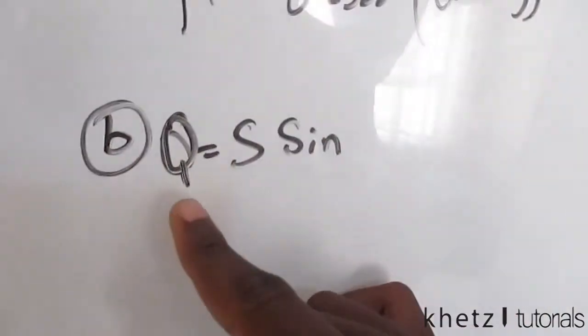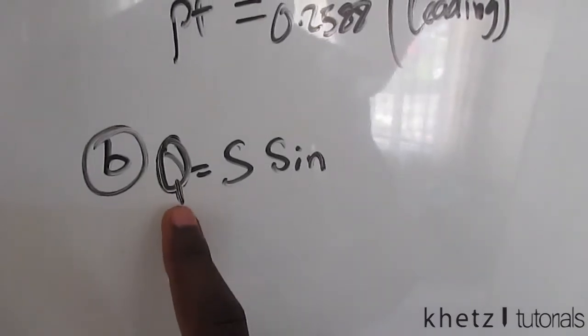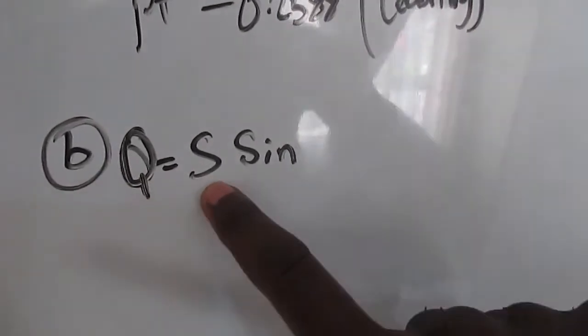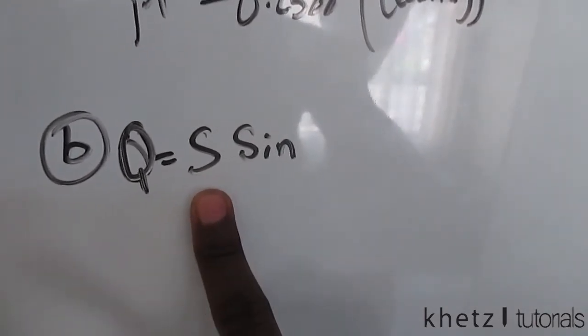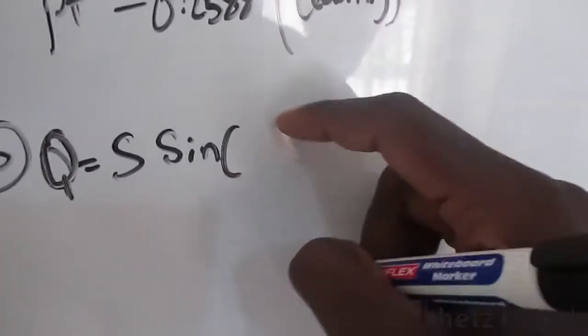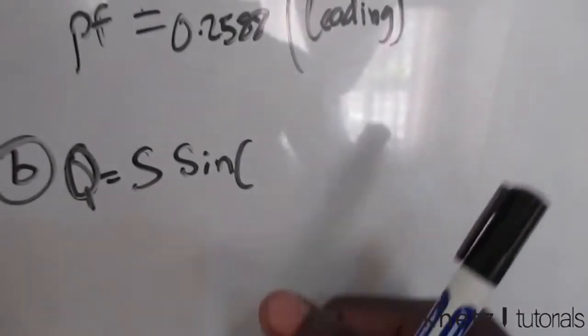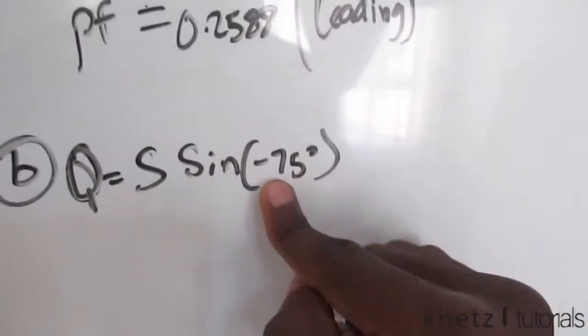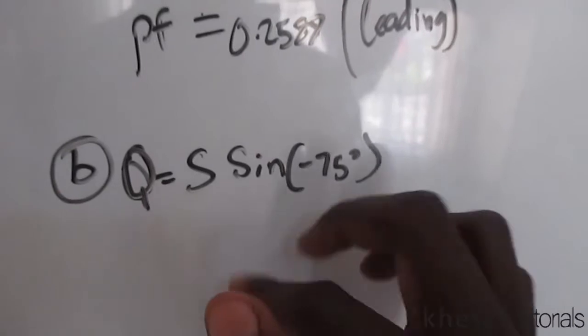The reactive power, which is the imaginary component of your complex power, so Q stands for reactive power equals the magnitude of our complex power times sine of that same angle, which is associated with impedance as well as the power factor, and the difference of the voltage and the current, which is negative 75 degrees. This negative is going to produce a negative because this is sine.